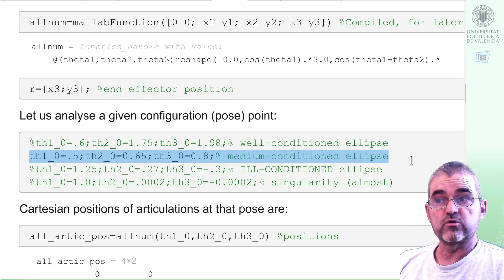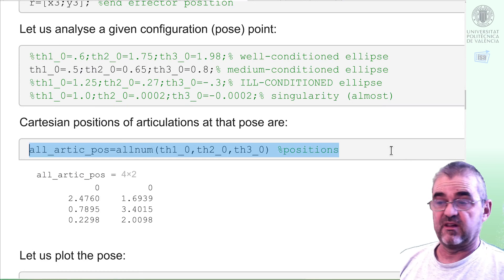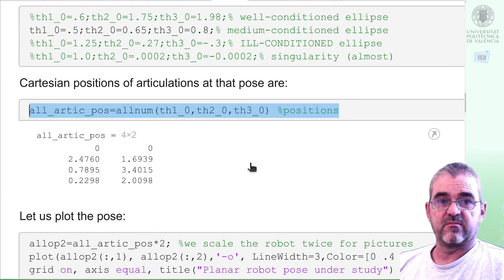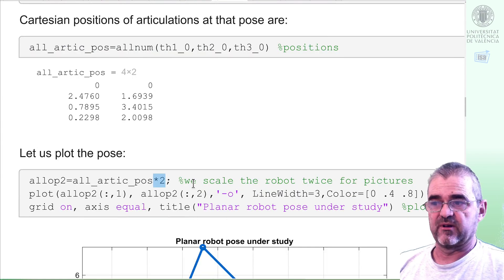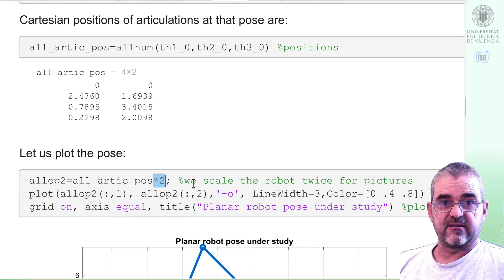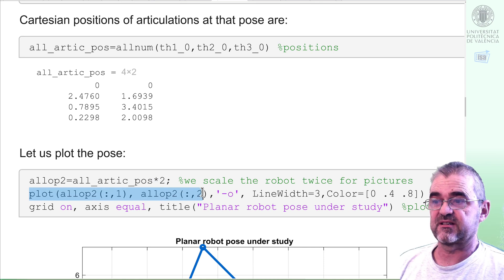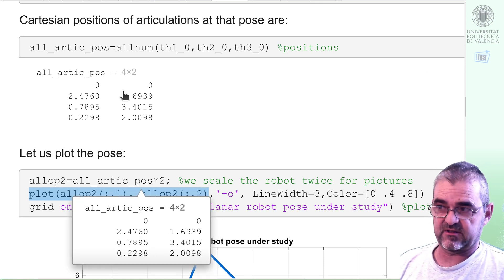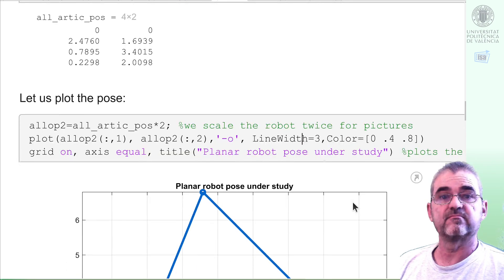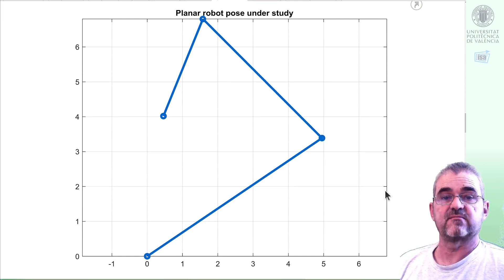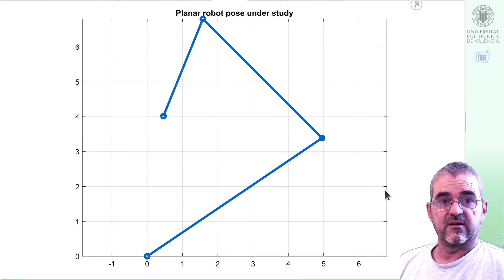We'll start analyzing this pose as our operating point in which we wish to analyze the manipulability. If I evaluate all articulation positions for that pose, I'll have these points here that can be easily interpreted when plotting. I will zoom it twice because I'll later add more stuff to the plot. If I plot these all articulation positions, then here we have the pose under study in which we wish to analyze manipulability.